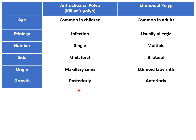Antrochoanal polyps grow posteriorly. In later stages they may be seen coming from the nasopharynx through the oral cavity — on examination, a globular mass can be seen coming from the nasopharynx. Ethmoidal polyps, on the other hand, grow anteriorly towards the anterior nares, so they can be seen on anterior rhinoscopy. Antrochoanal polyps may be missed on anterior rhinoscopy.